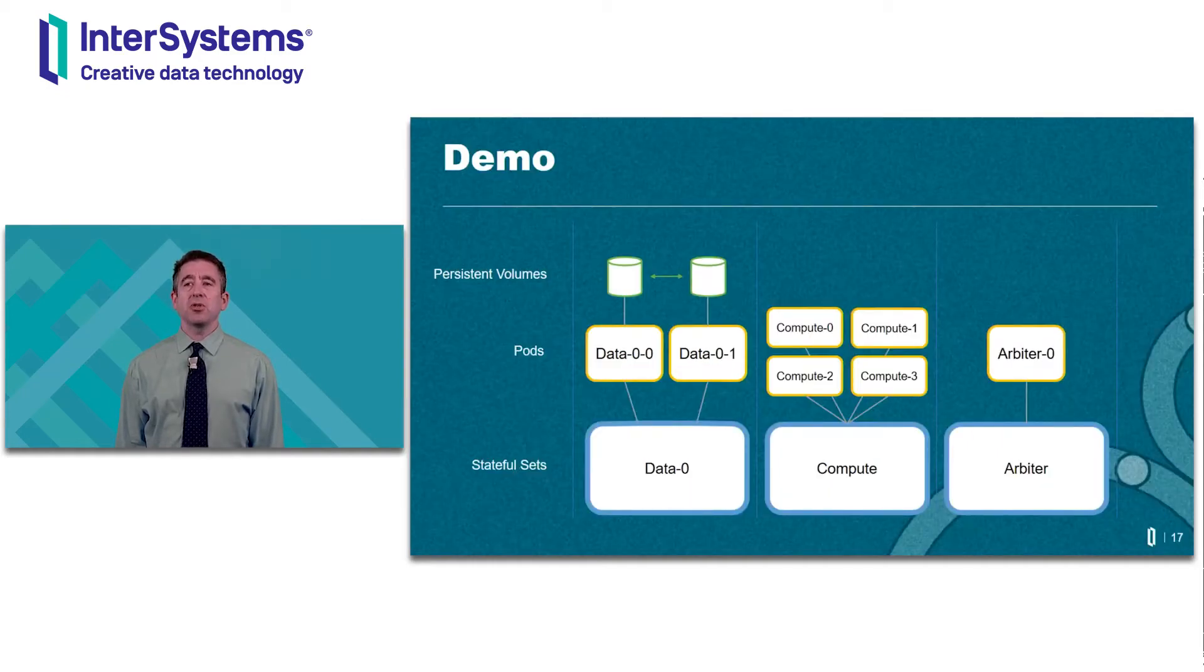Before starting the demo, I wanted to show the topology we'll be upgrading. It comprises one failover pair, four compute nodes, and an arbiter. The data nodes are going to start out running iris2020.3, and we'll be upgrading them to iris2020.4.